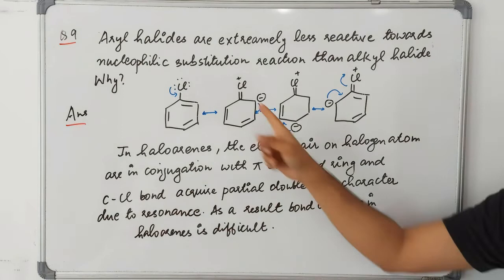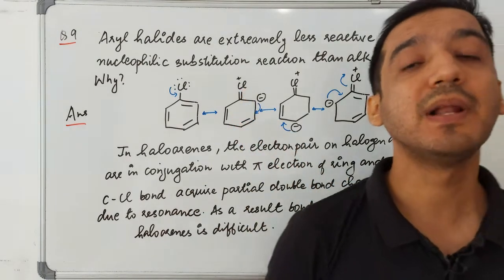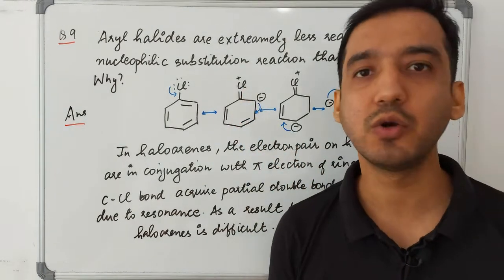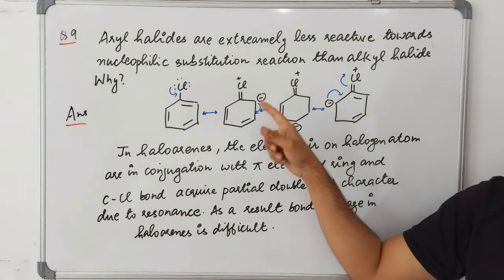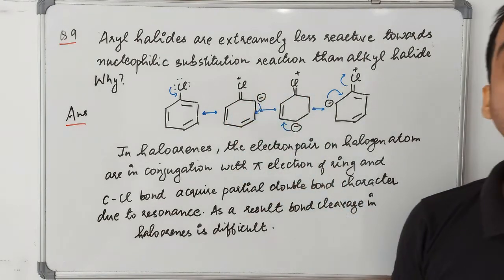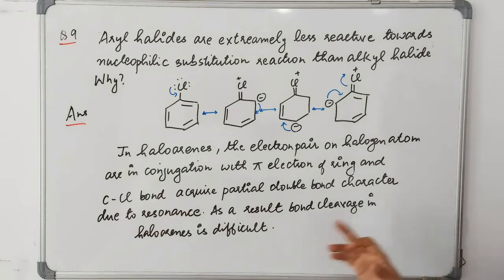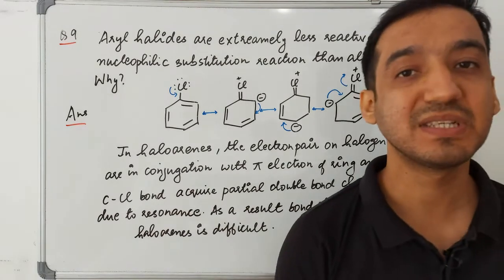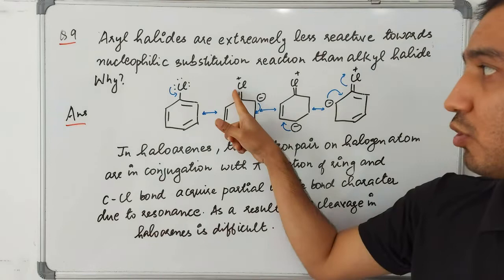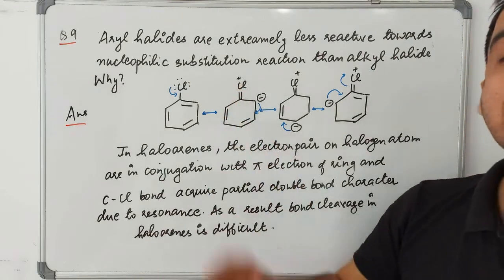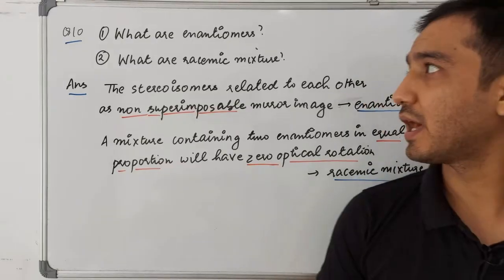Because of this conjugation, the C–Cl bond acquires partial double bond character. A double bond is difficult to break, so bond cleavage becomes very difficult for nucleophilic substitution. As a result, the chlorine cannot be easily replaced and nucleophilic substitution does not happen easily in aryl halides.